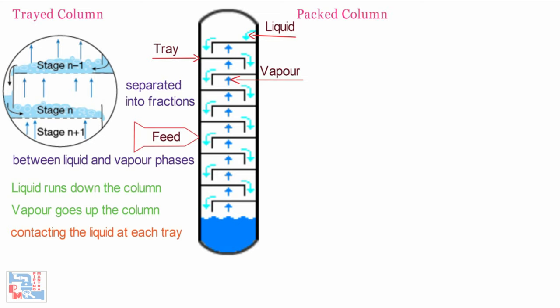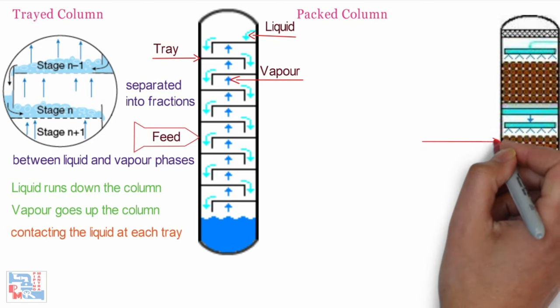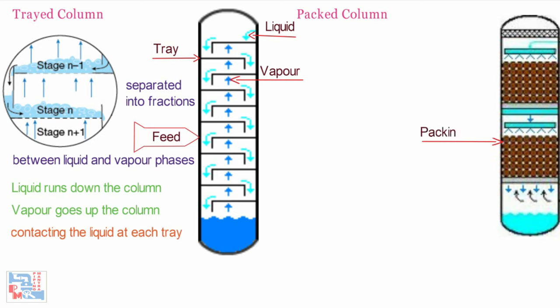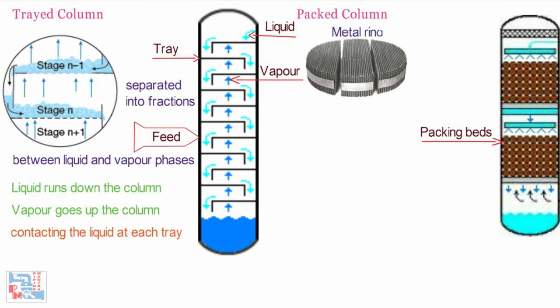Now let us see about packed column. In a packed column, instead of having trays, the units are packed with beds of metal or ceramic rings. These rings provide a large surface area within the volume of the column for interaction between liquid and gas or vapor.